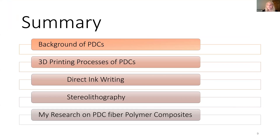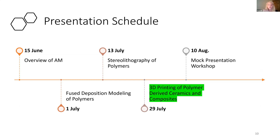In summary, this presentation covered the background of polymer-derived ceramics and how we obtain that ceramic from a pre-ceramic polymer. Then I dove into the 3D printing processes to fabricate polymer-derived ceramics, specifically direct ink writing and stereolithography. Finally, I presented my own research on incorporating polymer-derived ceramics into polymer composites. My past presentations covered additive manufacturing generally, fused deposition modeling, and stereolithography of polymers. Today focused on 3D printing of polymer-derived ceramics and composites, and my future presentation will cover the results of my summer research.